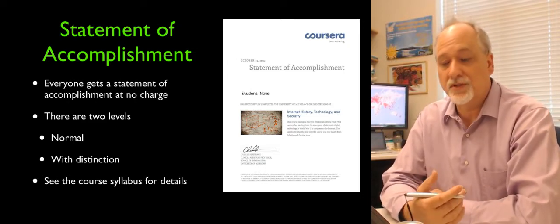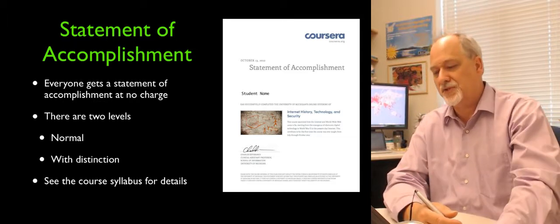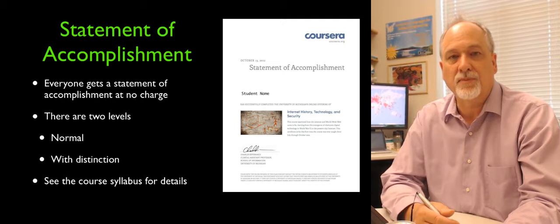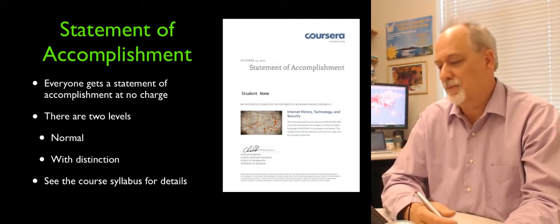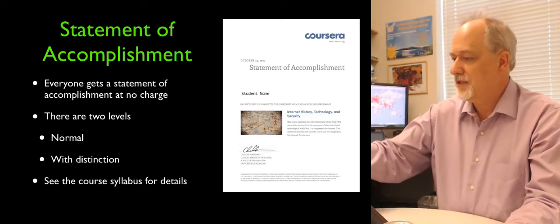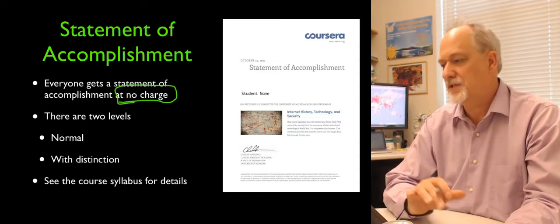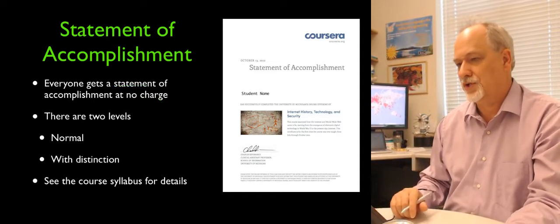There are two levels. One is normal and one with distinction, as I mentioned, 75% and 85%. And the syllabus has the exact details on how many points given the total number of points. And that's a statement of accomplishment. This is at no charge. There is no charge for the statement of accomplishment. If you finish, you get this absolutely at no charge.